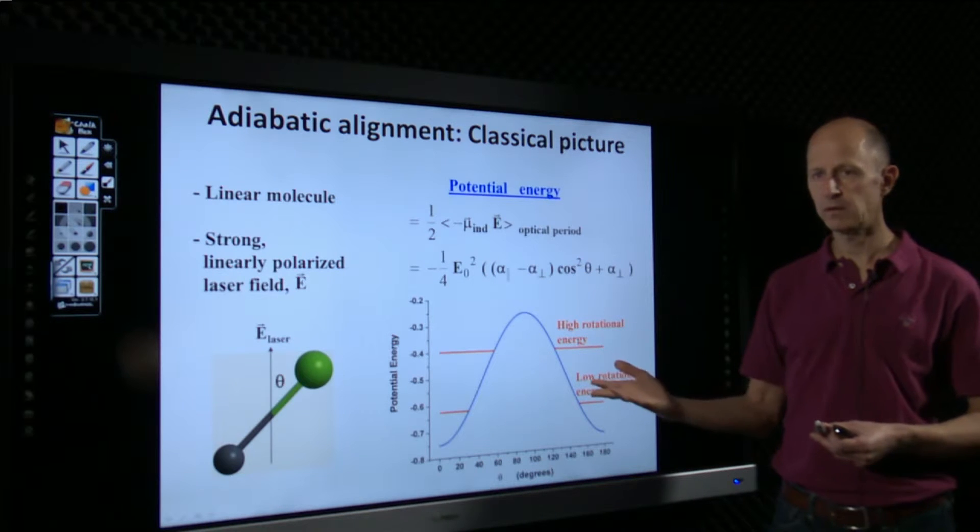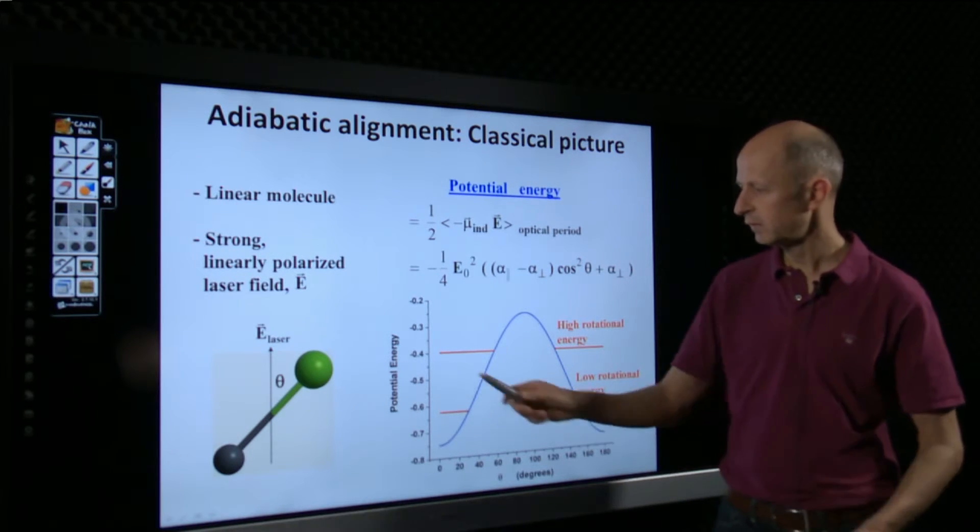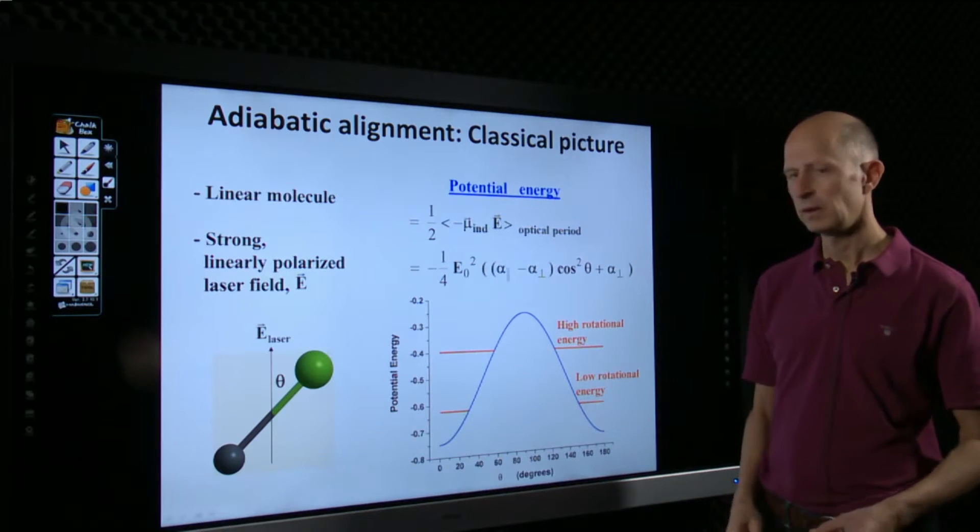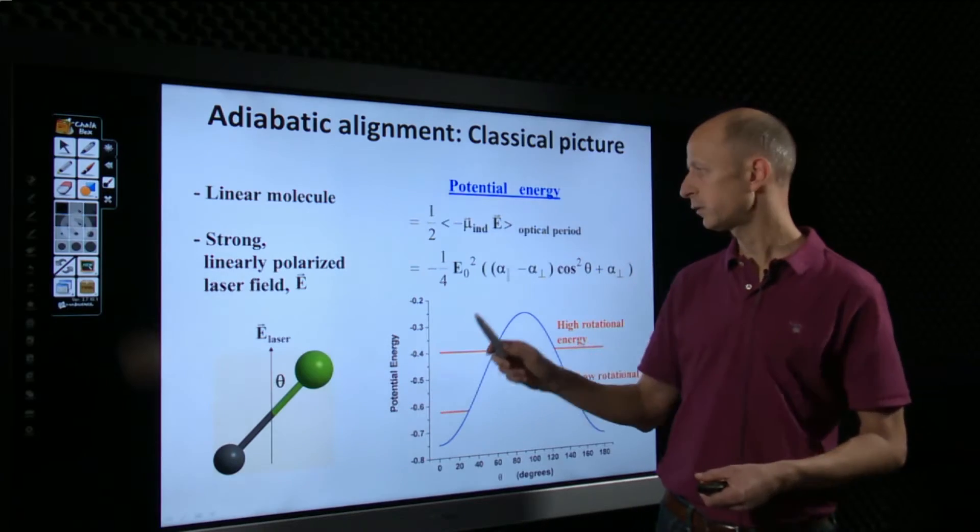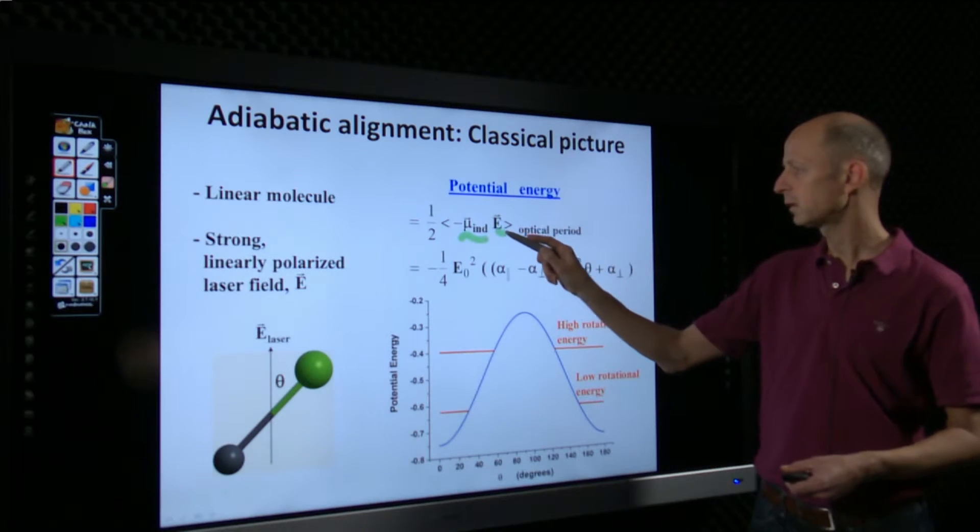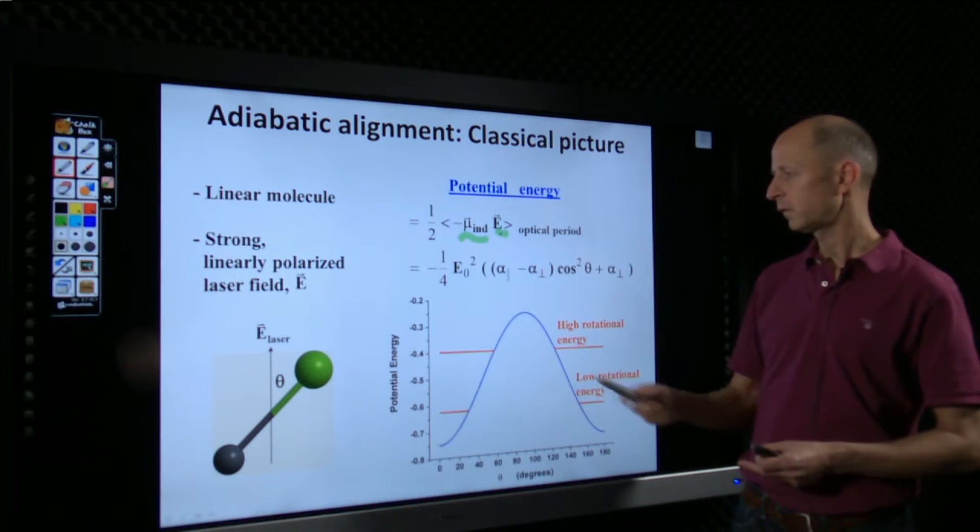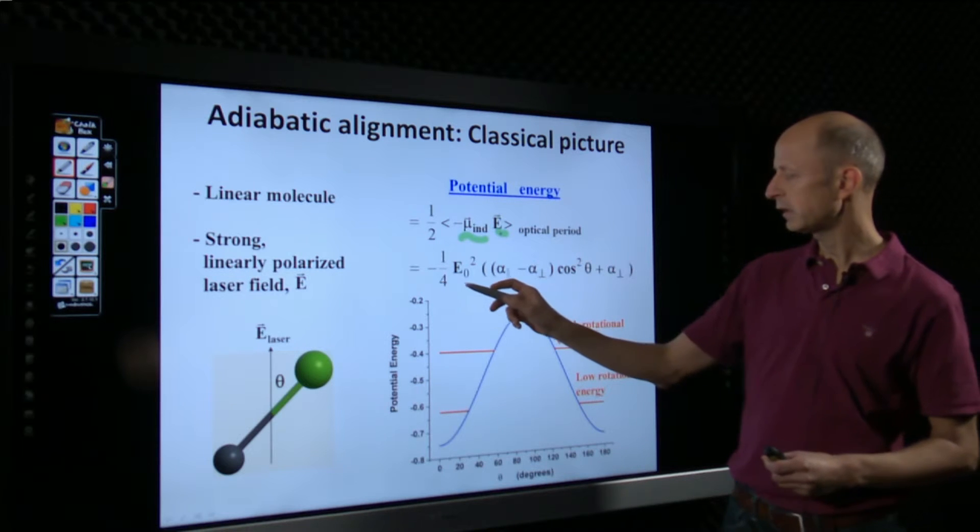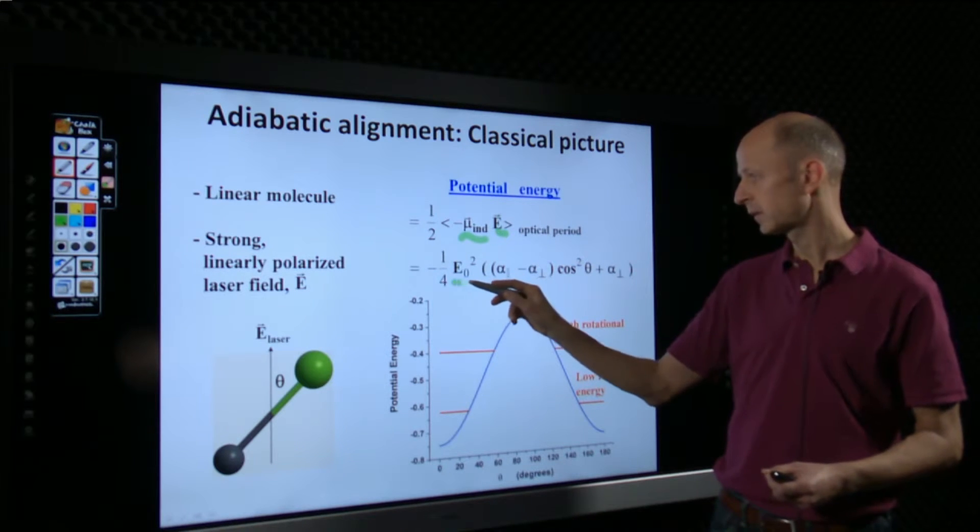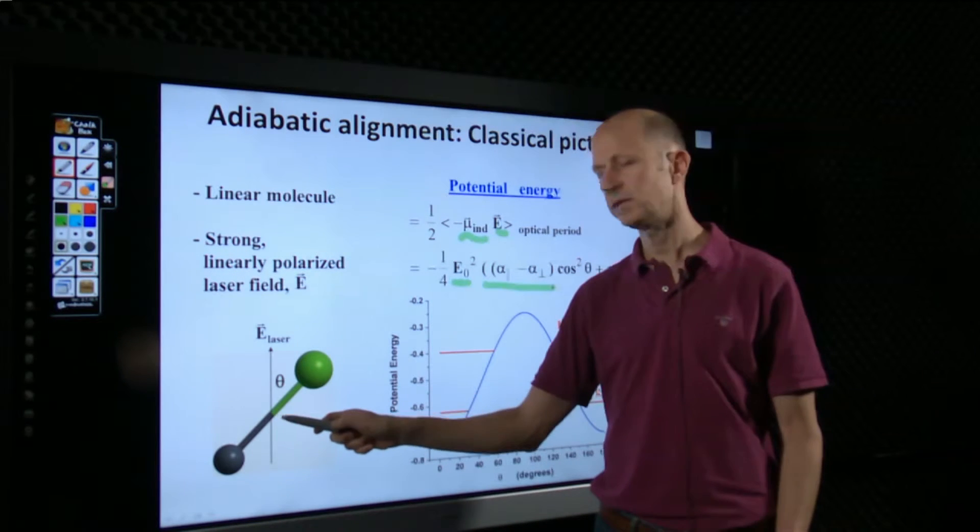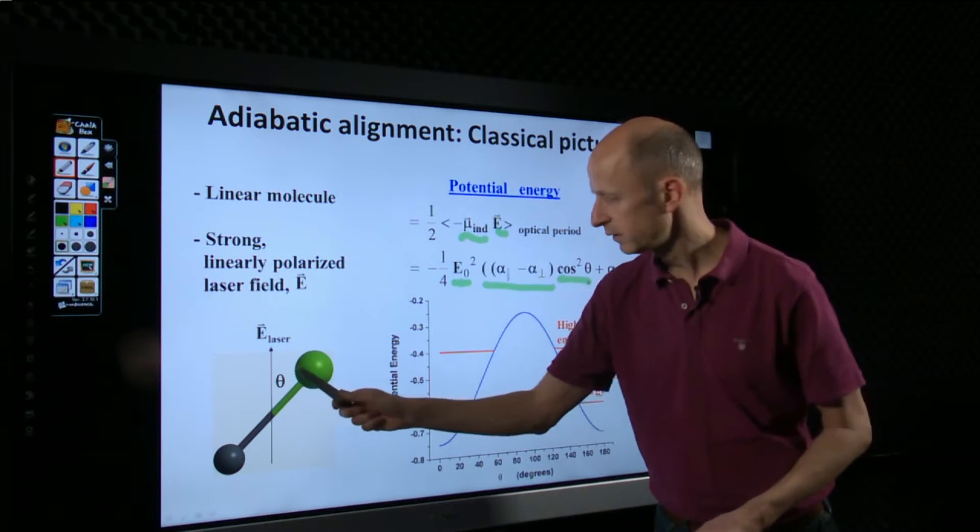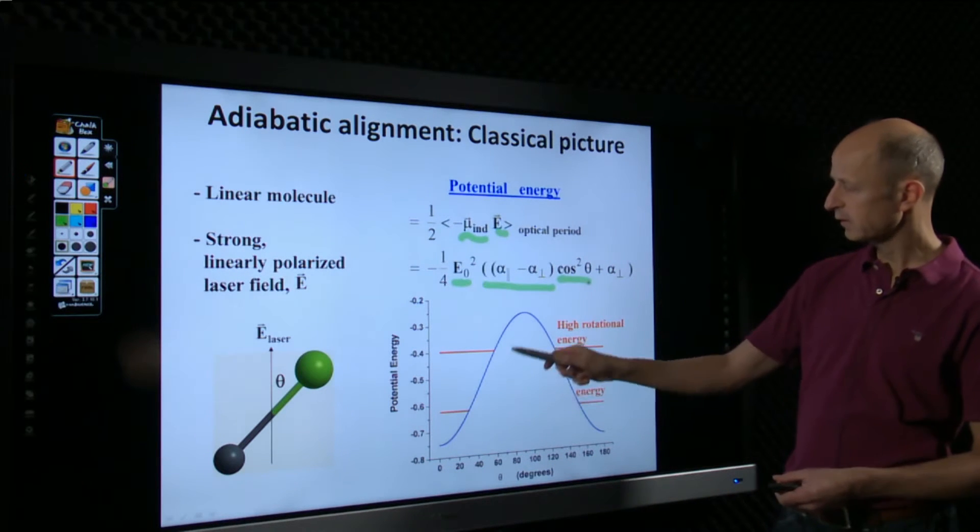So, the adiabatic alignment is explained in this view graph using a classical picture. What you have to envision here is think about a linear molecule that you place in a linearly polarized laser field. It's vertical in this direction. In this case, the laser field induces a dipole, which in turn interacts with the field. And the interaction energy is simply the product of the two. So, if we calculate this, I'll spare you the calculations, then you see that the interaction is given by this expression. So, it's the E field squared of the laser, that's the intensity, times the polarizability, or to be precise, the polarizability anisotropy, the difference between polarizability along and perpendicular to the axis, and times cosine squared theta, where theta is the angle between the field and the molecular axis.